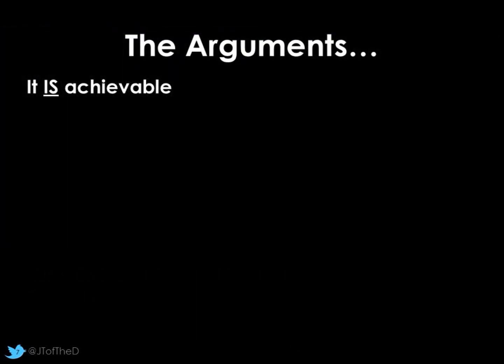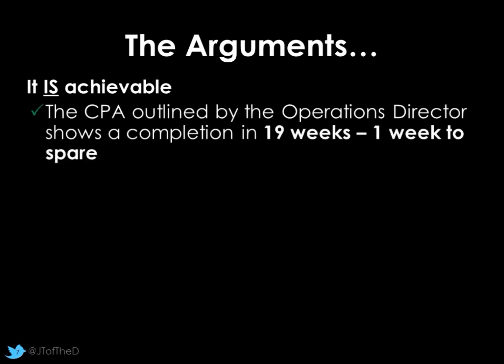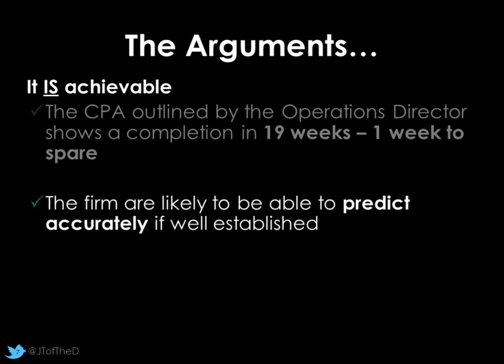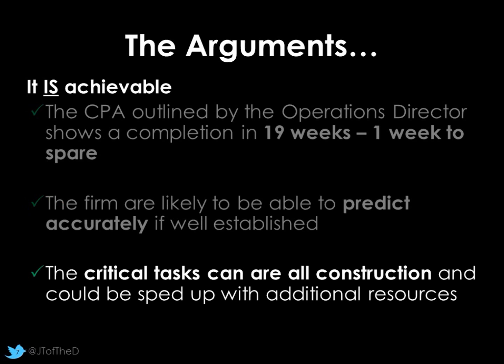Good evaluation requires both sides of the argument - you need balance. So, it is achievable. The critical path analysis outlined by the operations director shows we can complete in 19 weeks - one week to spare. The firm is likely to predict the marketing tasks A, B, C, D, and E quite accurately; they've probably been doing this for years. The factory tasks are construction-based, so we could throw more resources at those - more money, more workers, outside companies we can hold accountable. If those companies are experts contributing to our critical path, that might add accuracy.